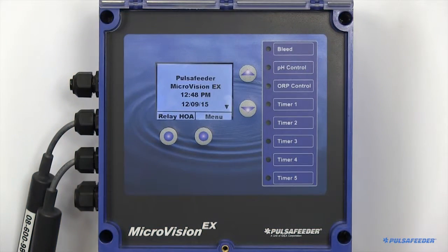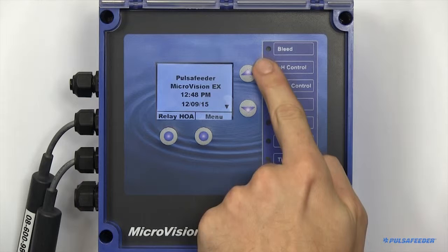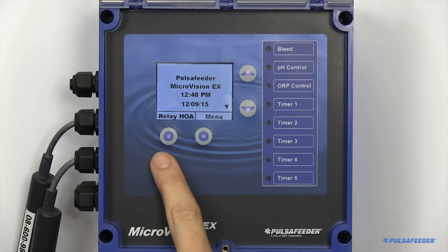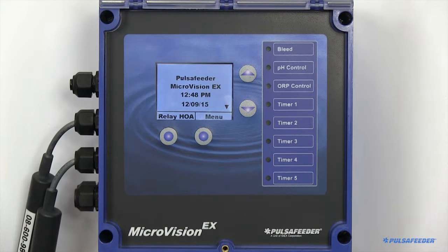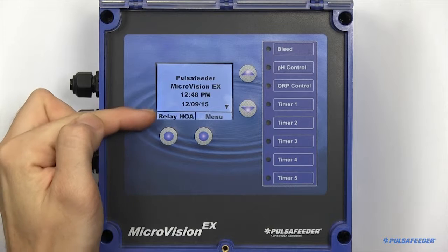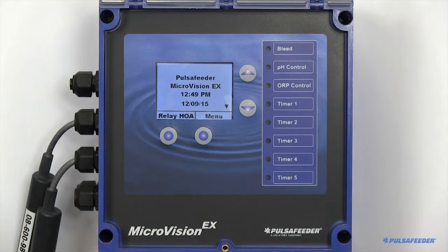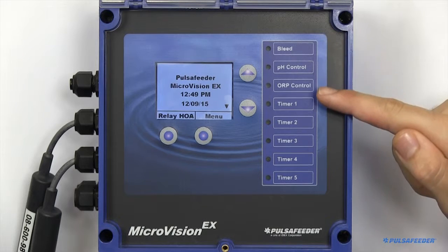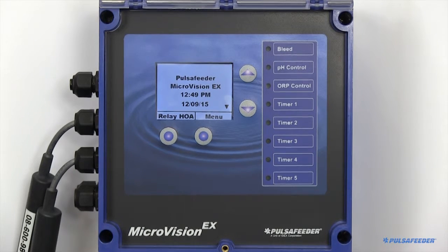The front panel of the MicroVision EX features an LCD display. There are also four buttons: an up and down button, and two soft buttons beneath the bottom of the LCD. The purpose of these buttons will be indicated in text at the bottom of the LCD. There are also several LEDs on the front of the unit. These LEDs reflect the state of the relay they are associated to.